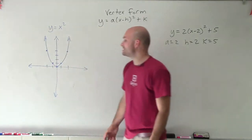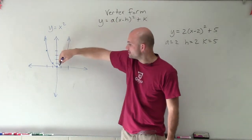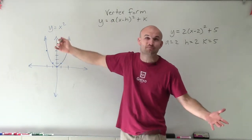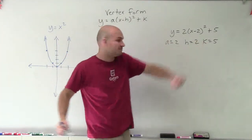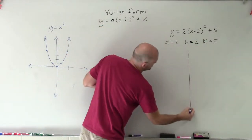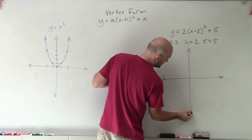So when I want to apply these transformations, I look at my parent graph. And what I'm going to do is I'm going to take the vertex, because that's the easiest point to transform. And I'm going to transform it two units to the right and five units up. So let's just go and create now a nice x and y-axis.